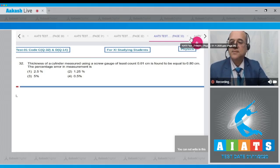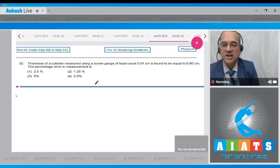Now, question number 32 says that, the thickness of a cylinder measured using a screw gauge of the least count 0.01 centimeter is found to be 0.80 centimeter. The percentage error in the measurement. Dear student, the least count is given, and least count is 0.01 centimeter.